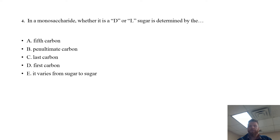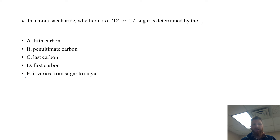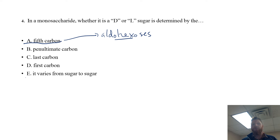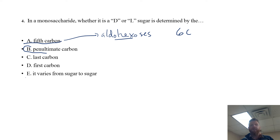This question pertains to your linear monosaccharides: in a monosaccharide, whether it is the D or L sugar is determined by — A, the fifth carbon; B, the penultimate carbon; C, the last carbon; D, the first carbon; or E, it varies from sugar to sugar. The fifth carbon is attractive because people are accustomed to looking at aldohexoses — for a six-carbon hexose, the L versus D designation is determined by carbon number five. However, if you look at something like an aldotetrose or aldopentose, you have to look at the penultimate carbon. So that is the correct answer: B, the penultimate carbon.